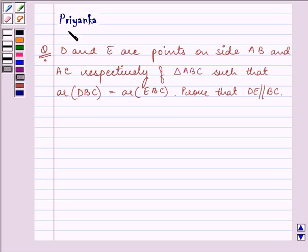Hi and how are you all today? My name is Priyanka and the question to be discussed says D and E are points on side AB and AC respectively of triangle ABC such that area of DBC is equal to area of EBC.